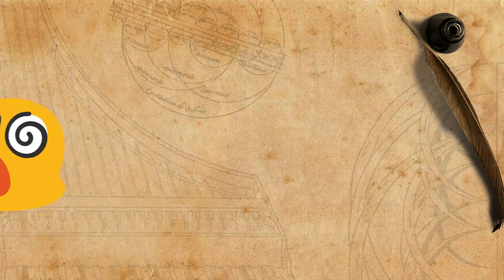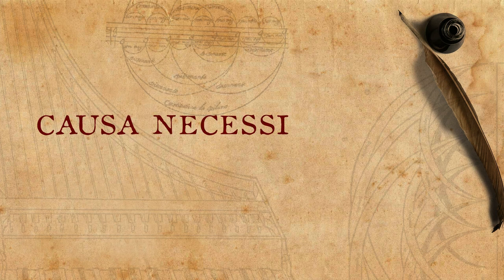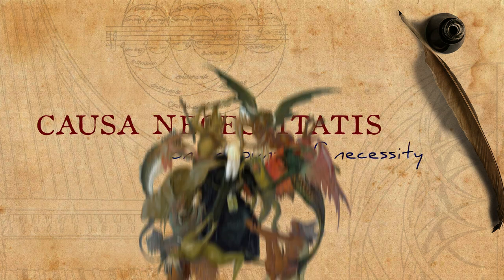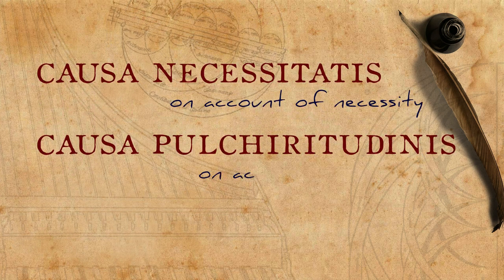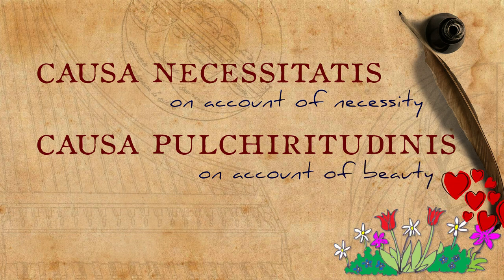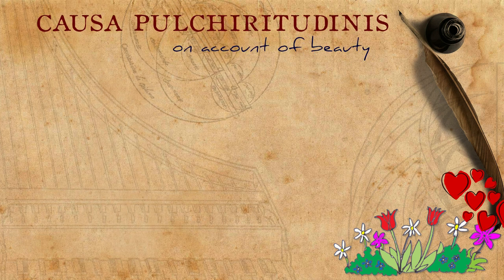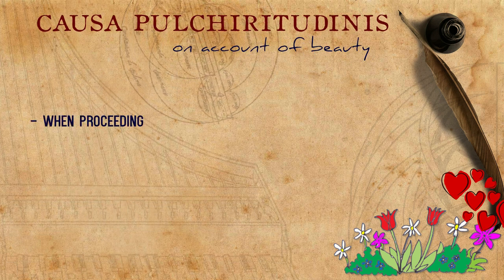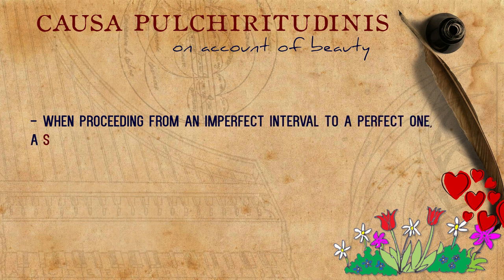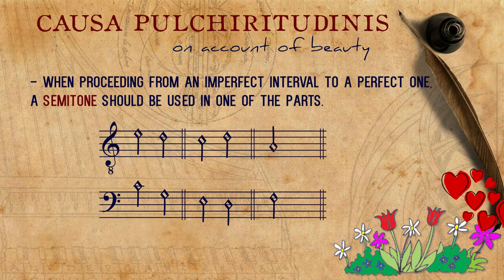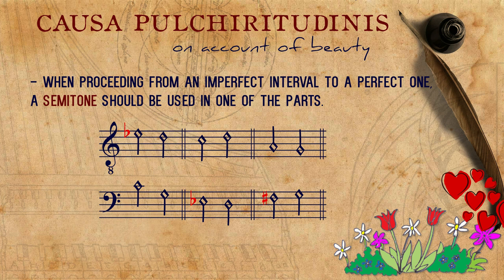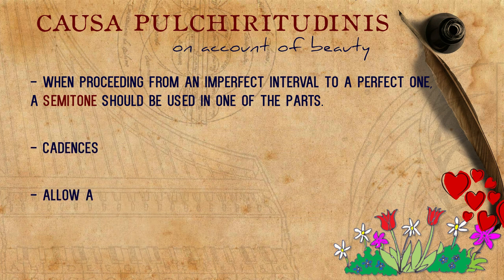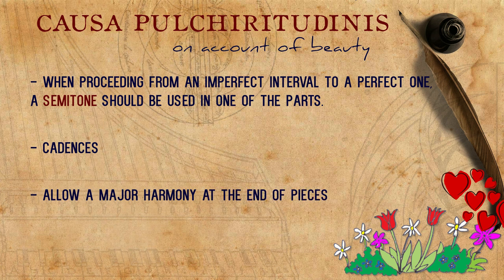The use of ficta in order to avoid bad intervals was regarded as causa necessitatis — on account of necessity. But there were other uses of ficta, regarded as causa pulcritudinis — on account of beauty. Such use of ficta is evident, for example, in the counterpoint rule or recommendation that dictates that when proceeding from an imperfect interval to a perfect one, a semitone should be used in one of the parts. This semitone, if needed, may be obtained through the use of ficta notes, as in these examples. Other common reasons for the use of musica ficta were cadences, and also to allow a major harmony at the end of pieces.